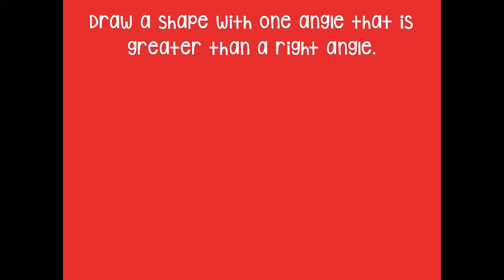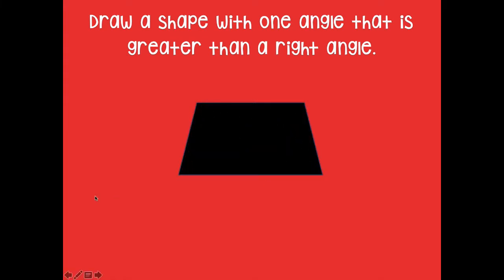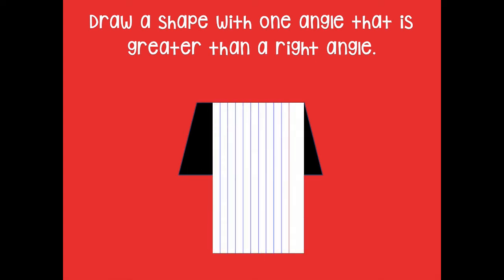Here's what I came up with. If you notice, the top side of my trapezoid has a greater-than-right angle, and then the bottom ones actually are less-than-right angles. See how we can see that with the corner of the index card — it goes past the corners, so it's greater than a right angle.